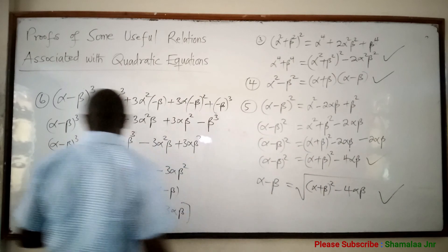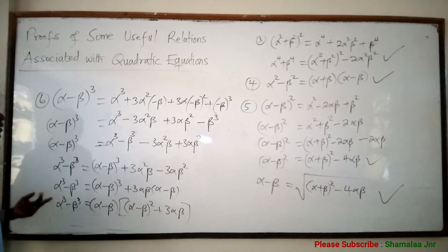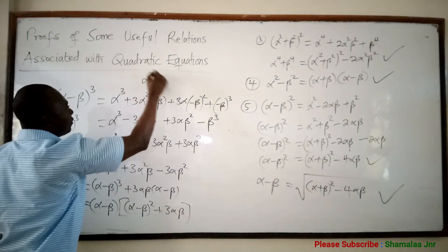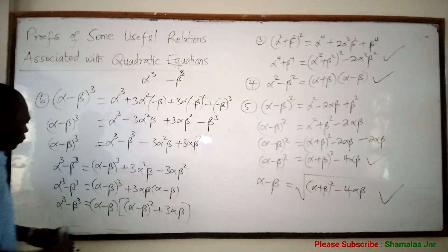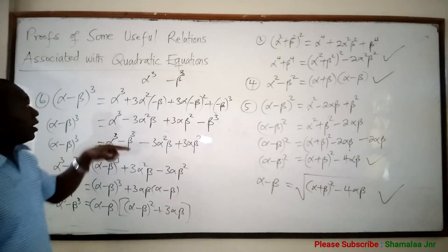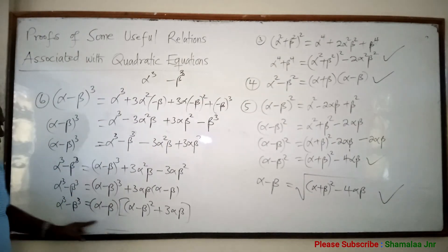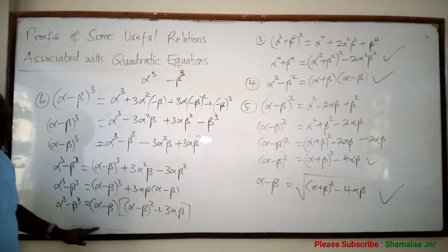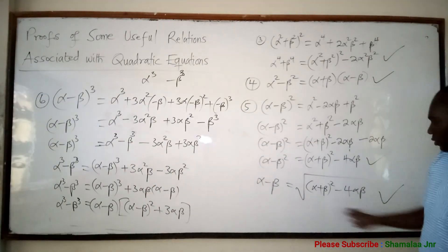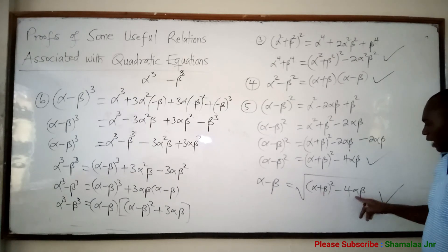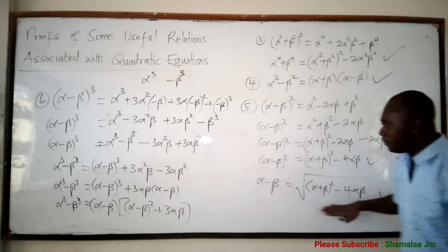So when you are given a question saying form a quadratic equation whose roots are alpha cubed and negative beta cubed, when you are finding the sum of roots it is going to be alpha cubed plus negative beta cubed, which equals alpha cubed minus beta cubed, so you are going to use this relation. If you need alpha minus beta, it is given by the square root of alpha plus beta all squared minus 4 alpha beta. Alpha plus beta is known and alpha beta is also known, so you put the values in, find the square root to get alpha minus beta, and use it.